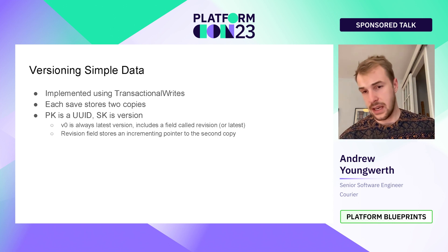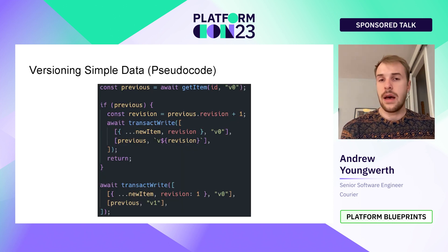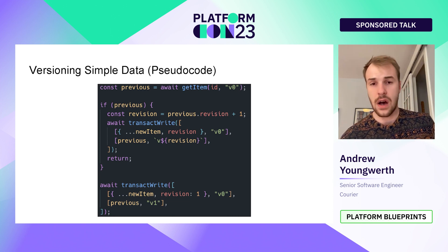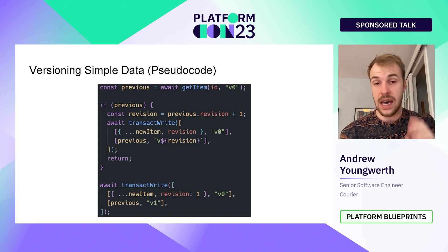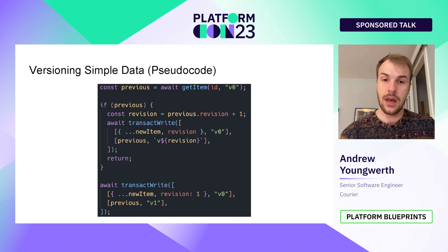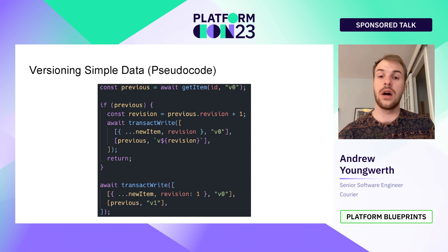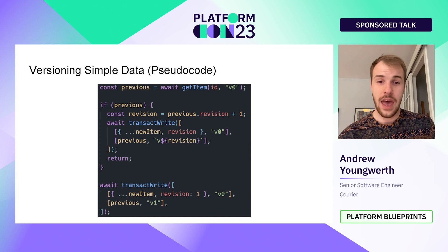The partition key can just be a unique ID — that's what it is in our case at Courier. Here's some pseudocode on what it looks like to actually do this operation. We first fetch the previous version. If one exists, we determine our revision number by checking the revision of the previous version and adding one. Then we write two different copies of the new item: one stored as V0 with the current revision, and one stored with the current revision number as the sort key. If no previous item exists, we just store the new item starting at revision one, storing both V1 and V0.